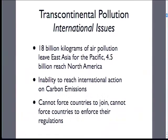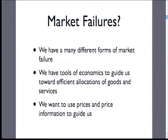Another big market failure we're facing with climate change is pollution between countries. Most of what we'll cover are regulations within the United States, but there's an estimate of 18 billion kilograms of air pollution leaving East Asia for the Pacific, with 4.5 billion kilograms arriving at North America. We moved a lot of industrial production out of North America, sourced everything from Asia, and now we're getting that pollution back — particulate matter, not just carbon emissions. We've had great difficulty between countries reaching any international accord on carbon emissions; Kyoto negotiations are contentious on financial reparations, and we can't force any country to join or enforce regulations. It's very hard to solve a global problem with so many different actors.